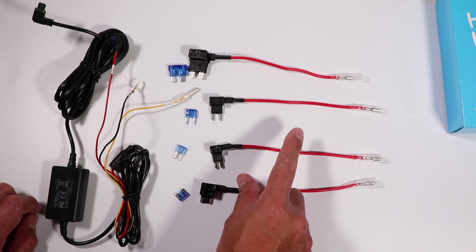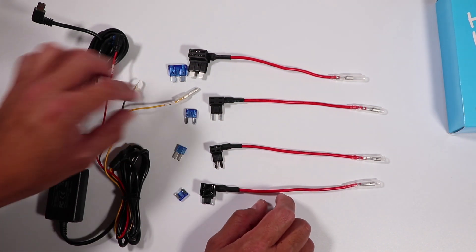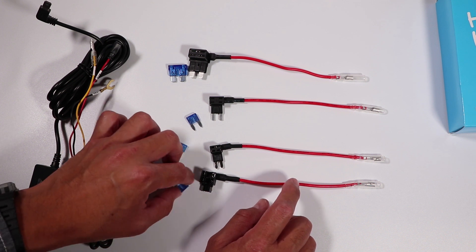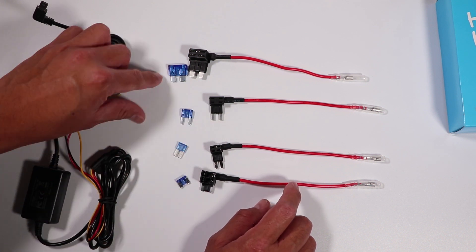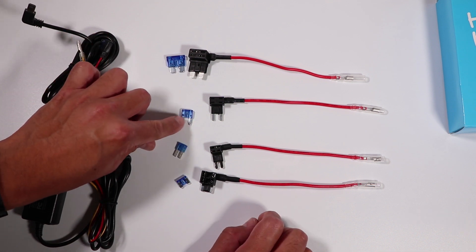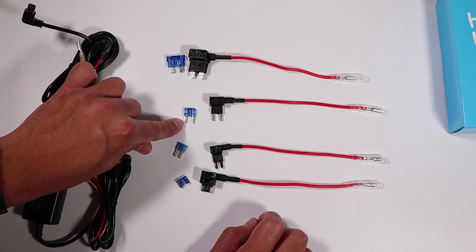We also get four little fuse taps, and the reason we get four is because there are different fuse sizes that we might encounter. The car may potentially have the larger fuses, which are called the ATO fuses, or maybe the car uses the mini fuse, which is a little smaller.